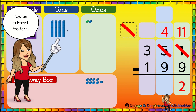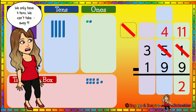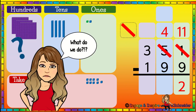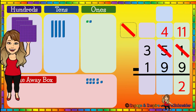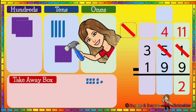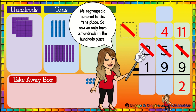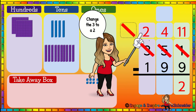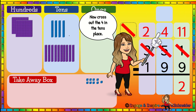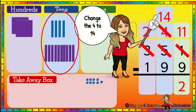Now we subtract the tens. Here we have four tens and we need to take away nine — we only have four tens, we can't take away nine. What do we do? We need to regroup. I'm going to take a hundred over to the tens place, regrouping one hundred to the tens place — we gotta break it up again. Now we need to cross out the three hundreds because we don't have three hundreds anymore; we took one of those hundreds over to the tens place, so now we only have two hundreds. We're going to change that three to two. And we're going to cross out the four in the tens place because we don't have four tens anymore. We took a hundred over to the tens place, and we know that a hundred is made up of ten tens. So ten plus four is fourteen — we're going to change that four to fourteen.